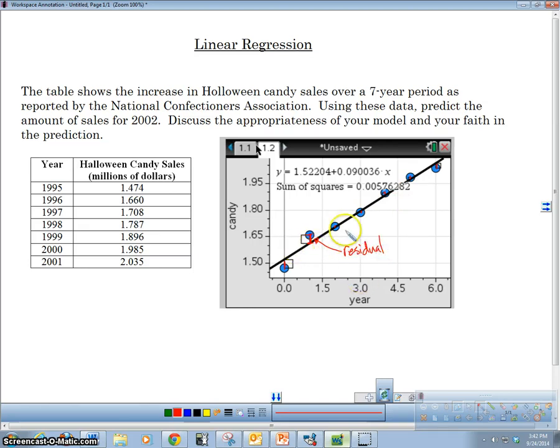And what our residual shows us, it shows our predicted value, our predicted value minus our actual value. Now, our predicted value is what we get when we plug in our values into our regression equation. So this is our prediction and our prediction is on the line and our actual is what we were actually given.